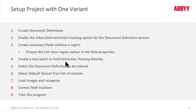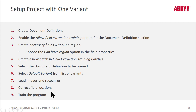Then you click View Field Extraction Training Batch to move to the Field Extraction Training Batch section, and press Ctrl-N to create a new batch. You'll be prompted to select the document definition you want to train, and then select the default variant since we only have one. Load images for that variant, correct the field locations by rubber banding, and then right-click on the training batch — an actual FlexiLayout is created as a result of that training step.